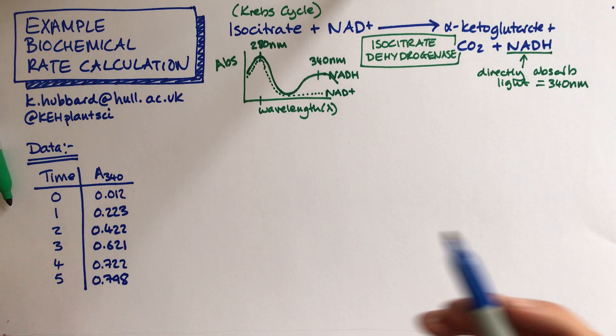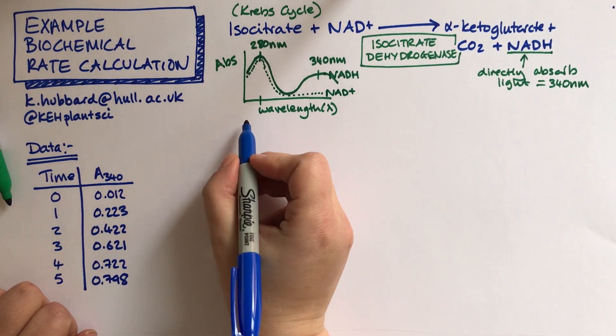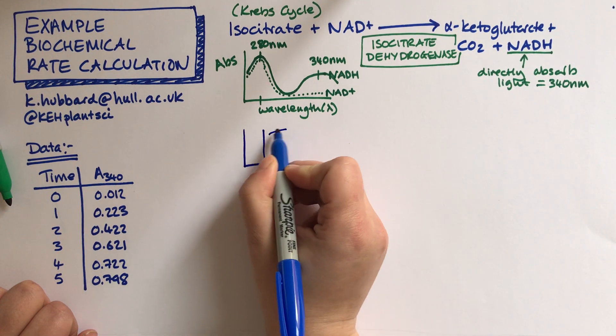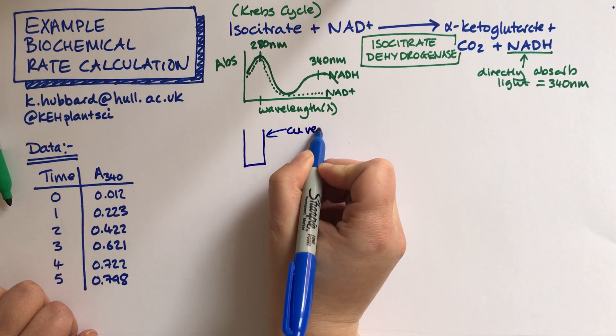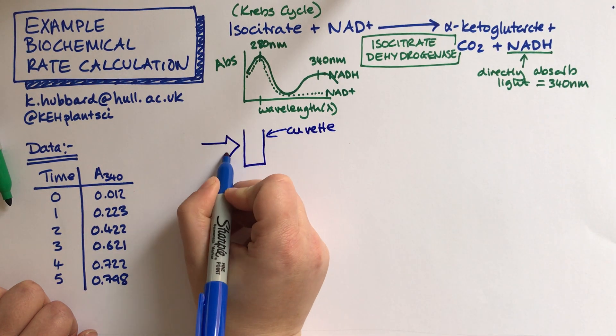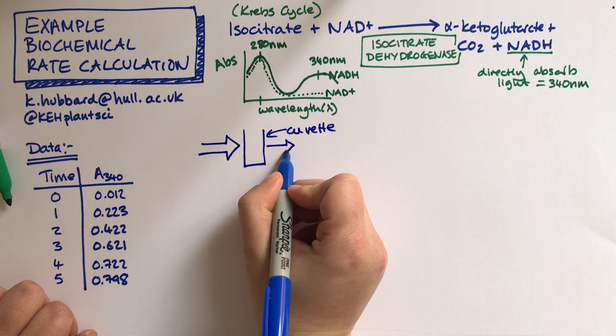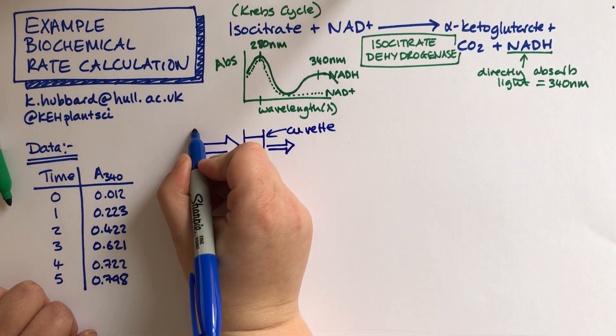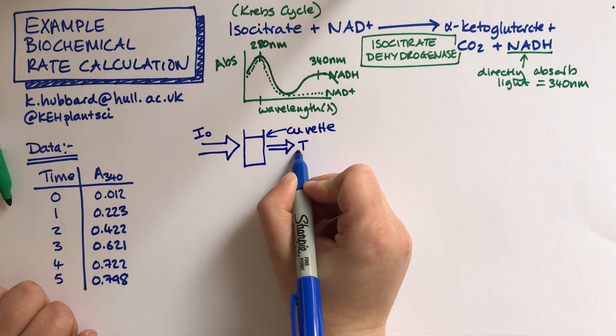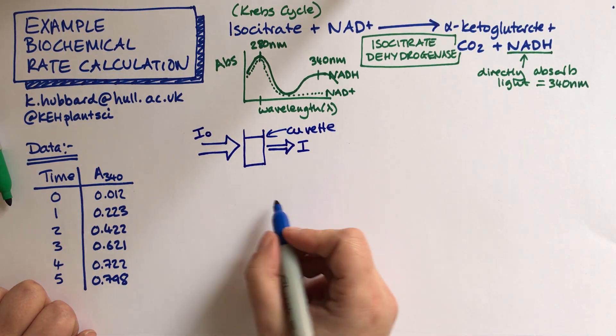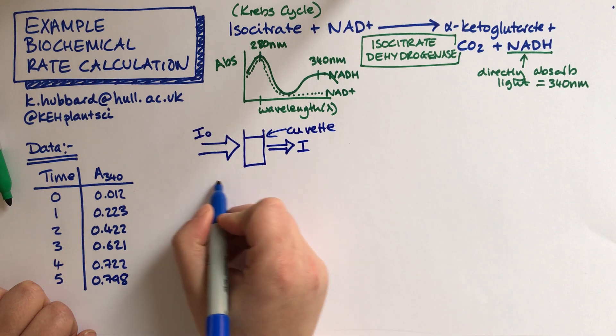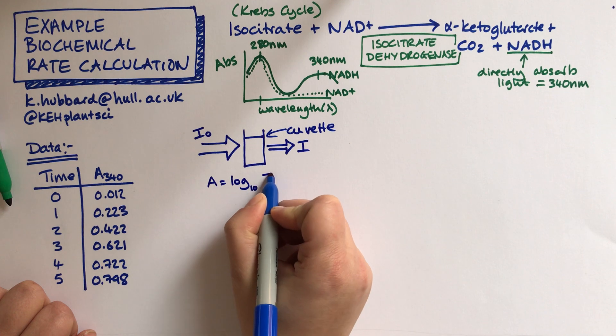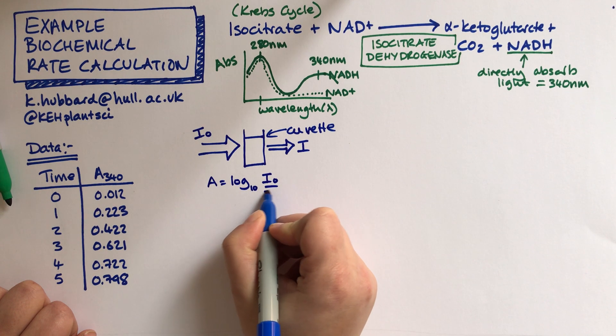So we set up our experiment. It's a spectrophotometer experiment so we've got a cuvette and we pass light through the sample. So we have our incident light I0 and our transmitted light and the ratio between those two we know is log 10 of I0 over I.